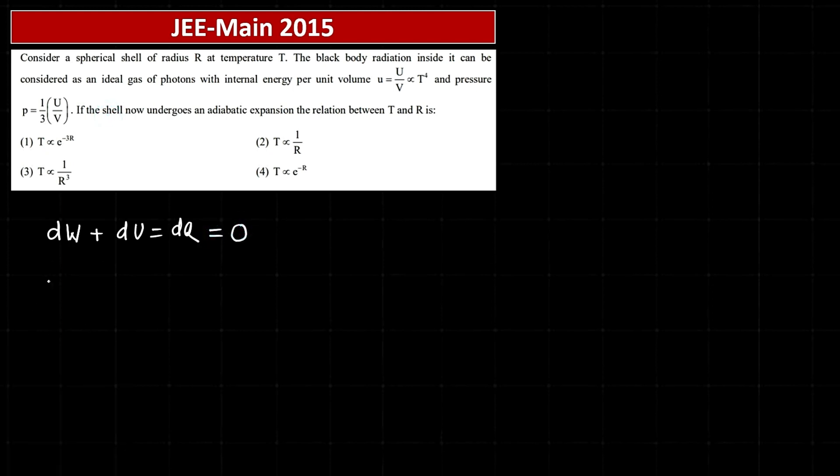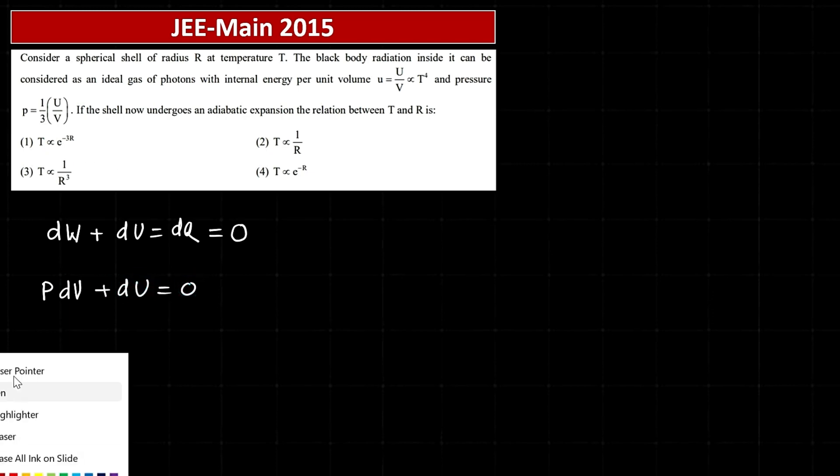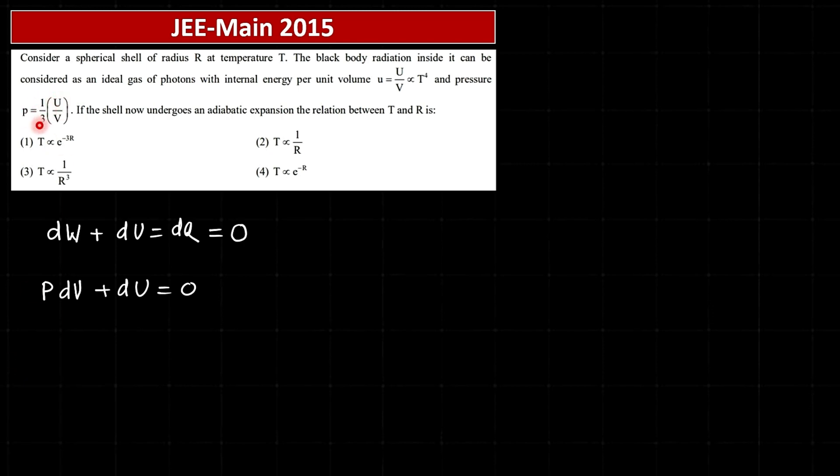And dW can be written as P pressure into dV, small change in volume, plus dU, and that adds up to zero. I can write P equals U by 3V.